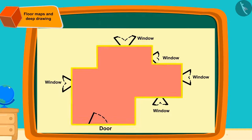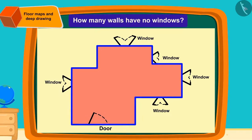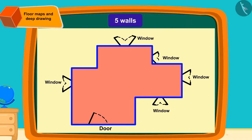How many walls are there in this room with no windows? There are five walls with no windows.